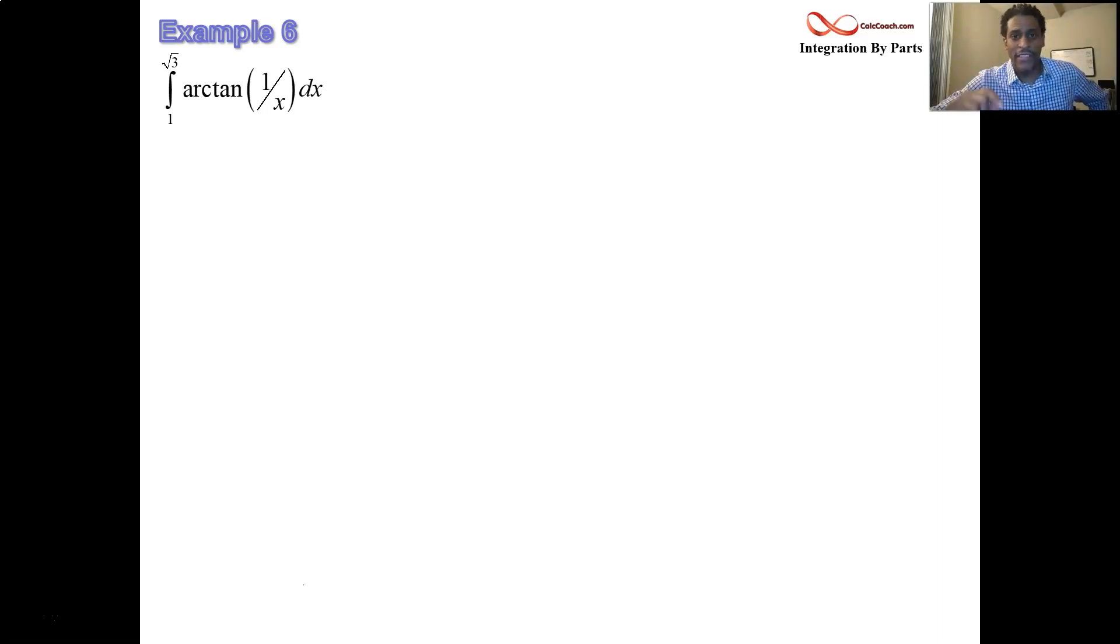Hello. Welcome to another video. This time we're looking at a difficult example. It's labeled as example number 6 in this series of lectures on integration by parts. And we're trying to find the antiderivative of the arctan of 1 over x. And it's a definite integral. We're trying to find it from 1 to root 3.